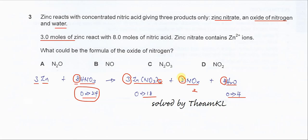So since the coefficient here is 2, the x must be 1, because 2 times 1 is 2 oxygen. So we know that NOx must be NO. Answer is B.